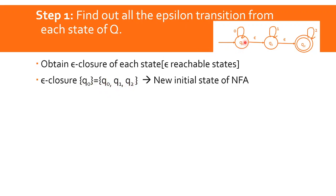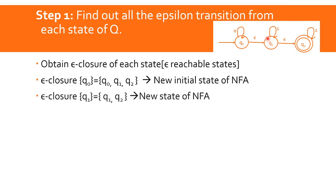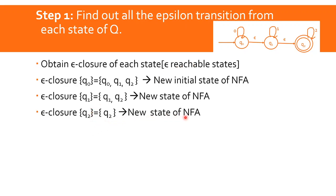If we take the initial state Q0, the epsilon closure of Q0 is {Q0, Q1, Q2}. Epsilon closure of Q1: from Q1, we can go to Q2 on epsilon, so epsilon closure of Q1 equals {Q1, Q2}. Epsilon closure of Q2: Q2 has no epsilon transitions, so epsilon closure of Q2 equals {Q2}.